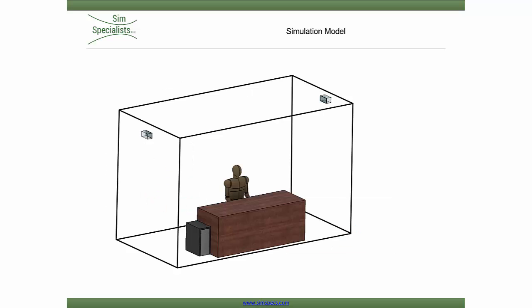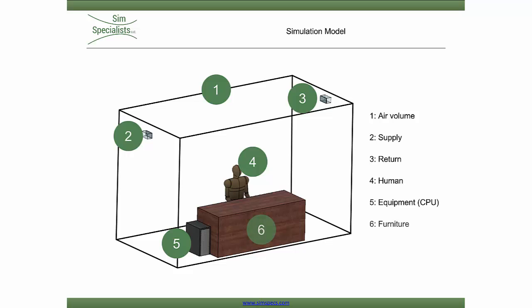The simulation model is an idealized office space consisting of several components: an air volume, a supply, a return, a human, a computer, and a desk.